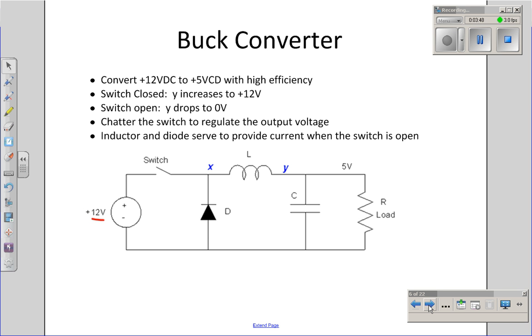Suppose instead I want to come up with a more efficient design. But I have a battery operated device, full percent efficiency isn't that good. How do I convert 12 volts down to 5 volts at higher efficiencies? That's a buck converter.